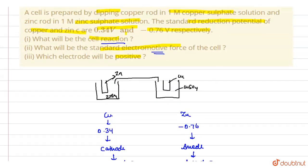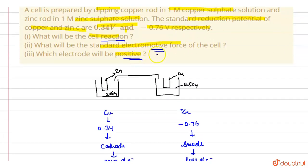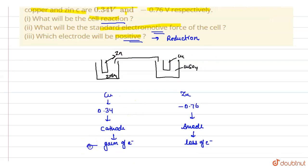Next part is which electrode will be positive? The electrode on which reduction takes place is taken as positive. Gain of electrons is known as reduction, and loss of electrons is known as oxidation. So copper will act as the positive electrode.